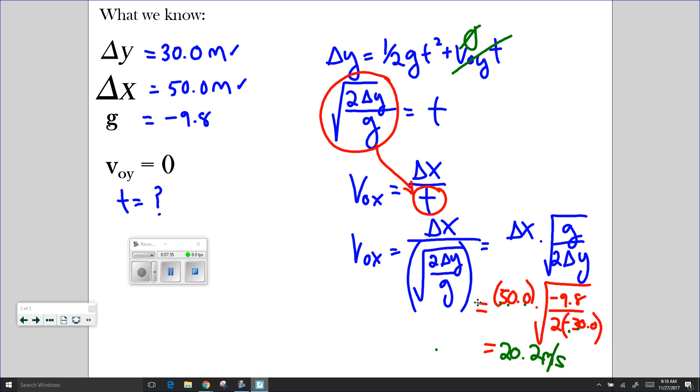So that is how simple it is to solve horizontal projectile problems. All you have to do is realize the time it takes for that projectile to fall is the same amount of time it takes for the projectile to travel its particular range. You should mesh the two equations together, and you should be able to solve for whatever variable the question is asking you for.